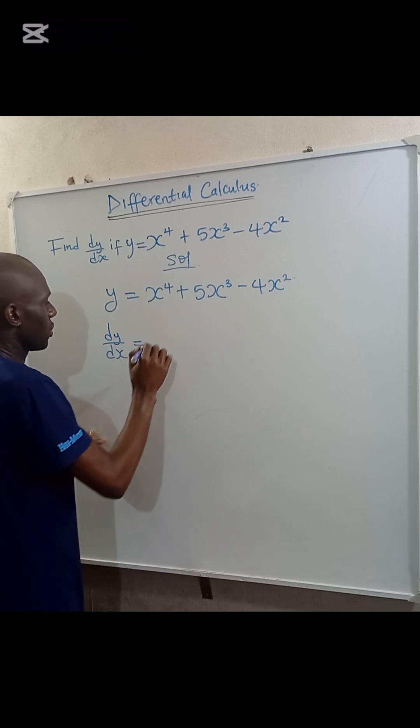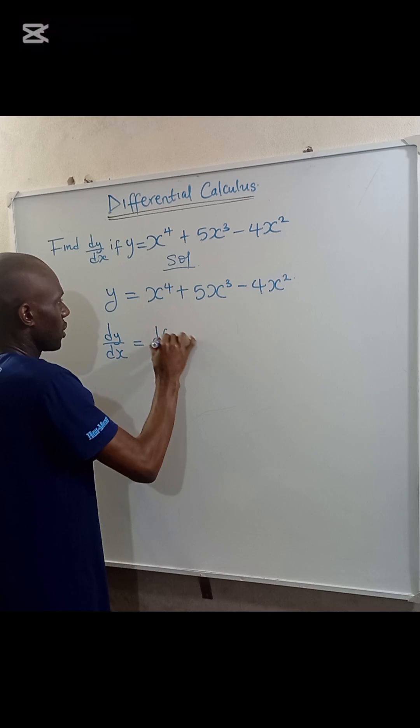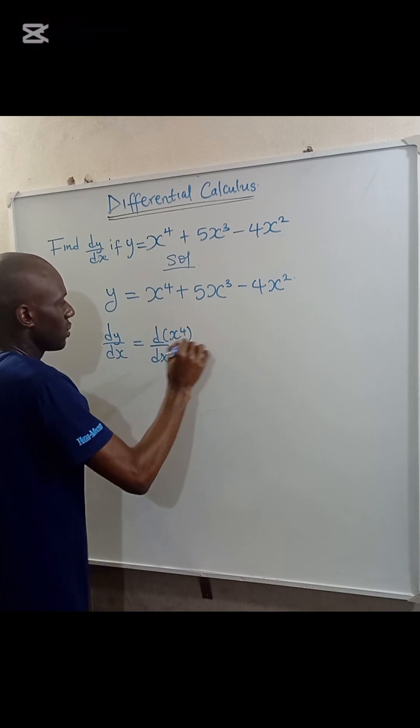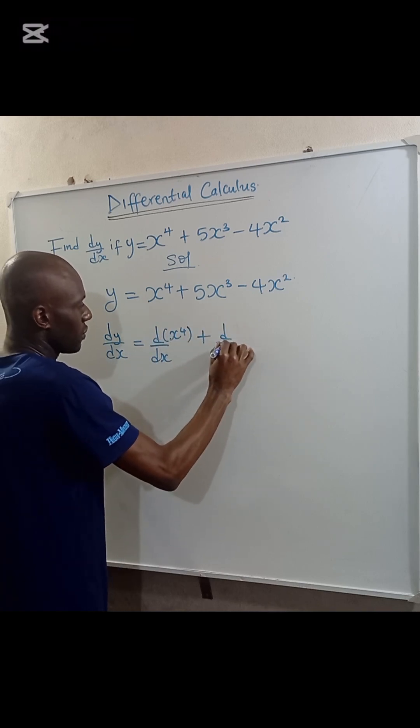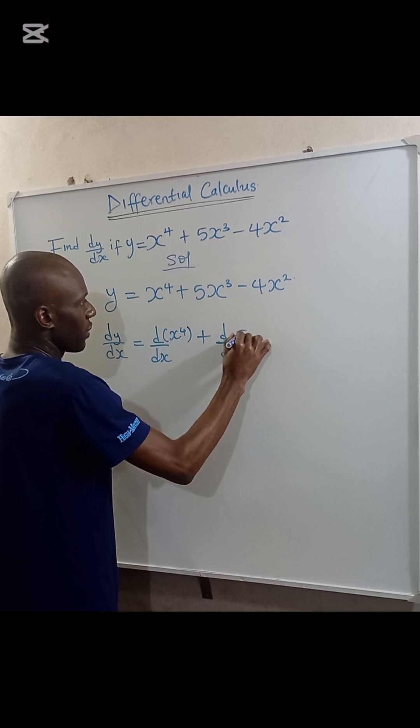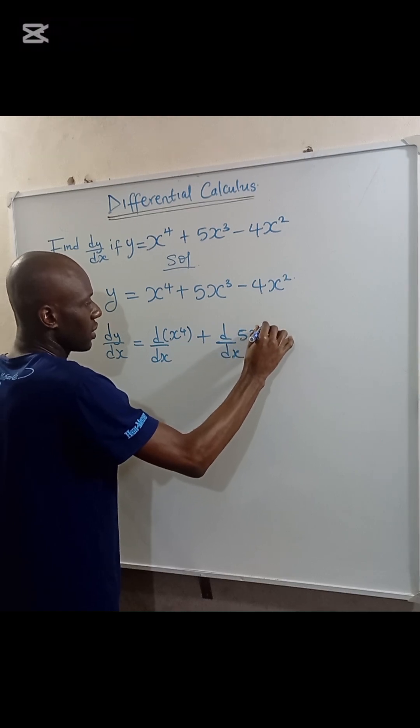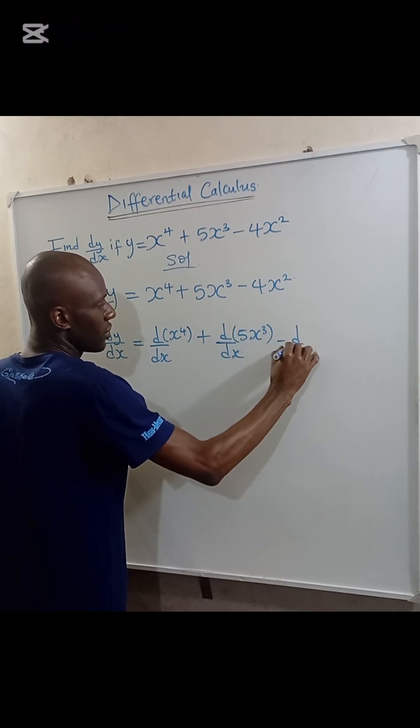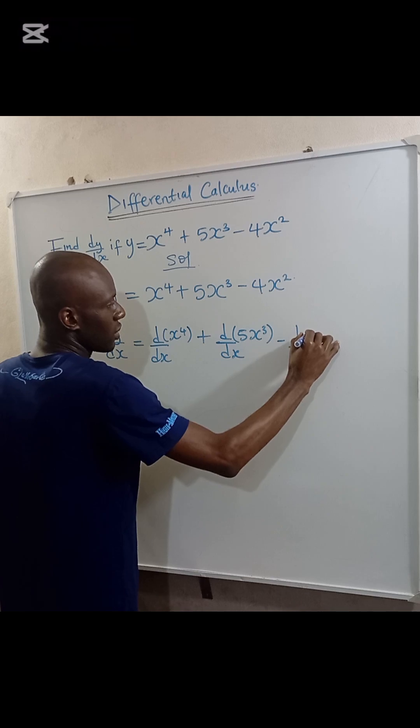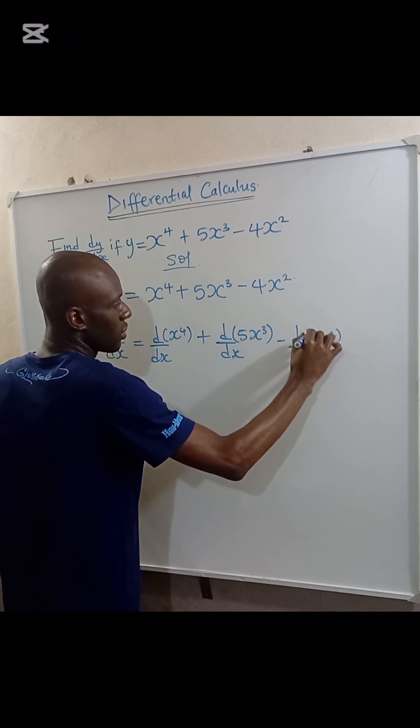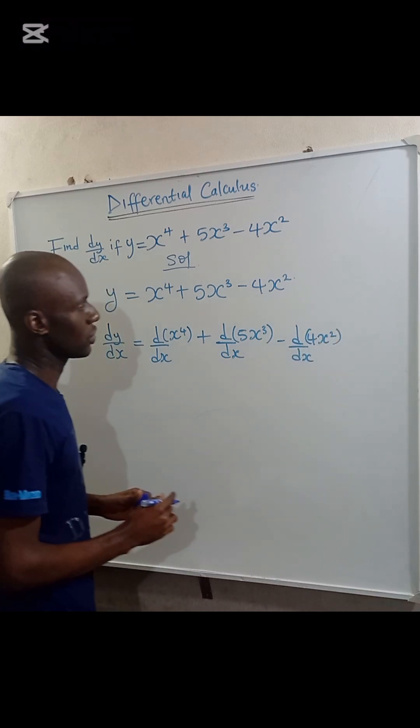this will be equal to d/dx of x to the power of 4 plus d/dx of 5x to the power of 3 minus d/dx of 4x to the power of 2.